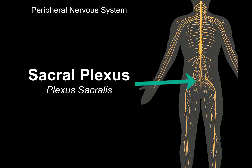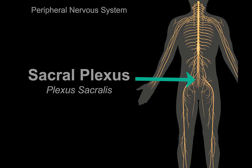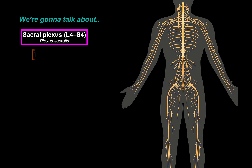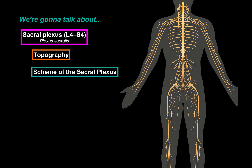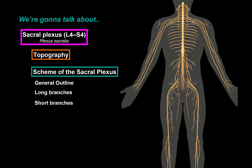In this video we're going to talk about the sacral plexus. We already talked about the cervical plexus, the brachial plexus, and the lumbar plexus. The sacral plexus is the last large plexus. We'll go through the topography, make a scheme of the sacral plexus, divide the nerves into long and short branches, go through each nerve with clinical importance, and finish with a quiz.